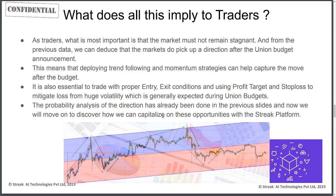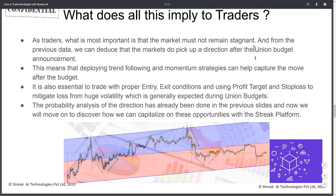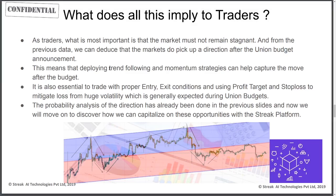Now that we have gone through this analysis, let's understand what all this implies to us as traders. As a trader, it is important that the market has some directional movement. From the previous data, we can deduce that markets do pick up some kind of directional trend after the union budget announcement — it is not sideways, it can be upwards or downwards. This means deploying a trend following and momentum strategy after a budget can capture moves correctly. You should try both bullish and bearish following strategies and backtest them on previous budgets to understand how they capture market moves.